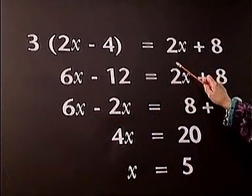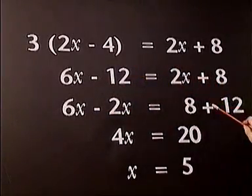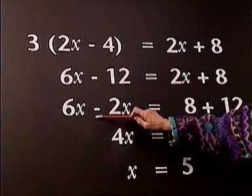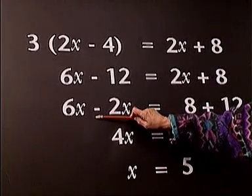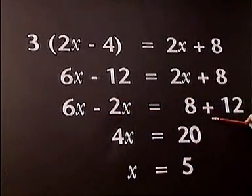we use a simple rule, which is change the side, change the sign. So that we have subtracted 2x from both sides, and we have added 12 to both sides.